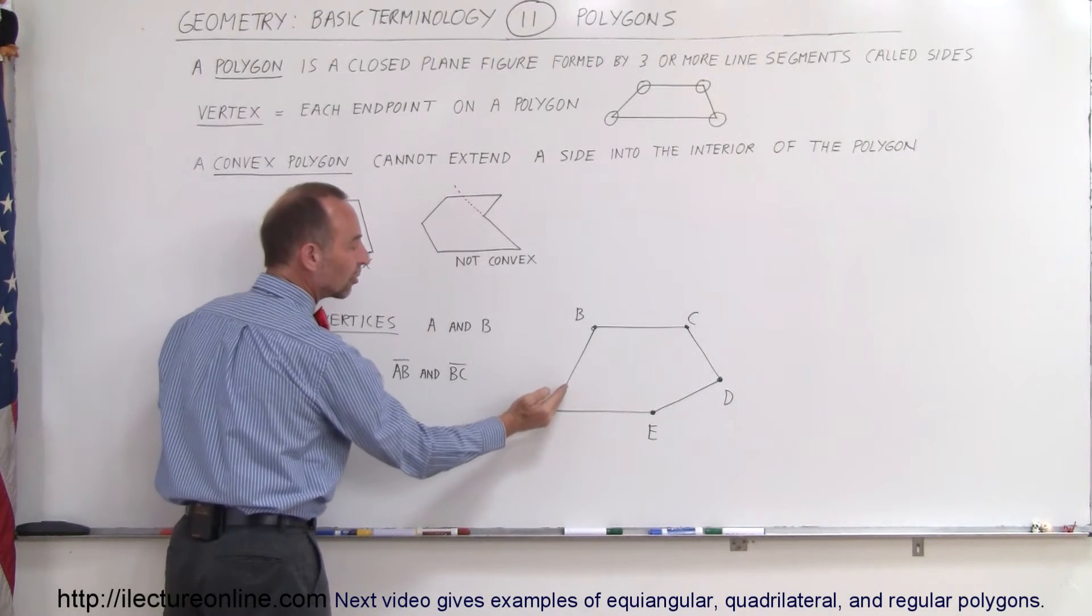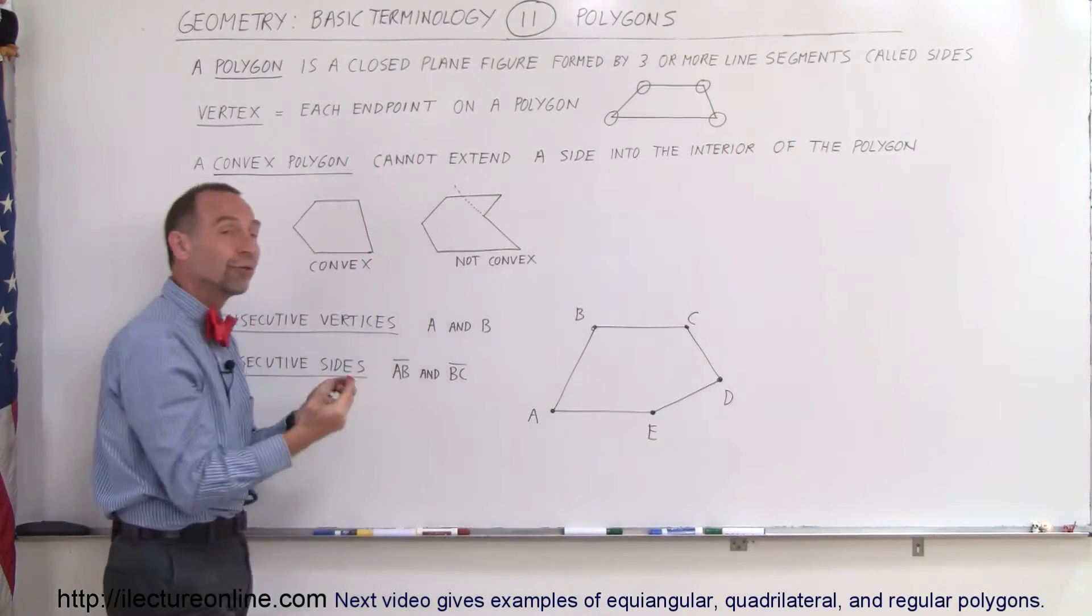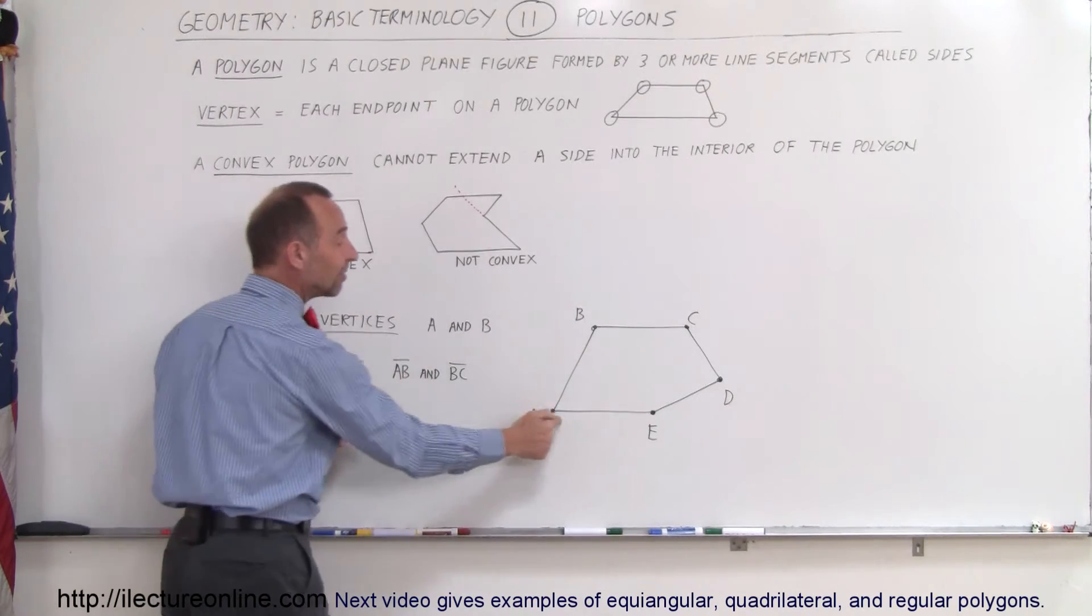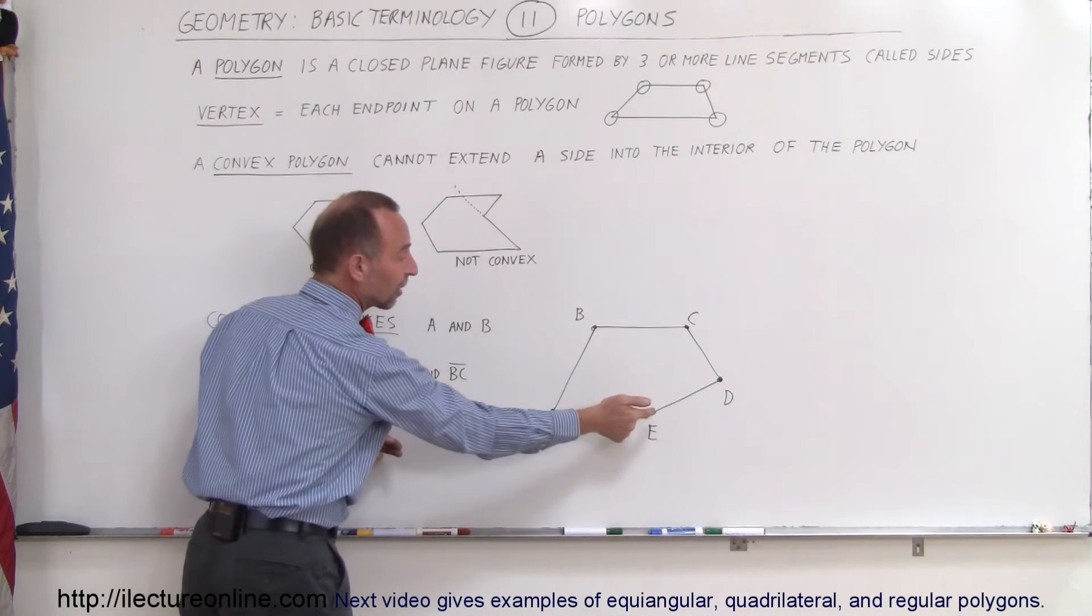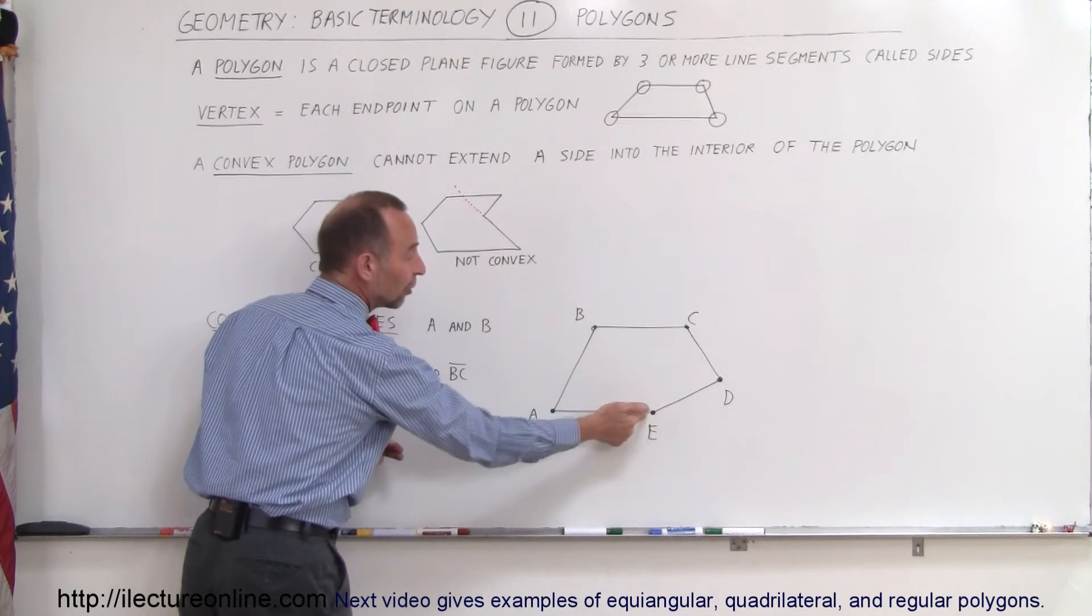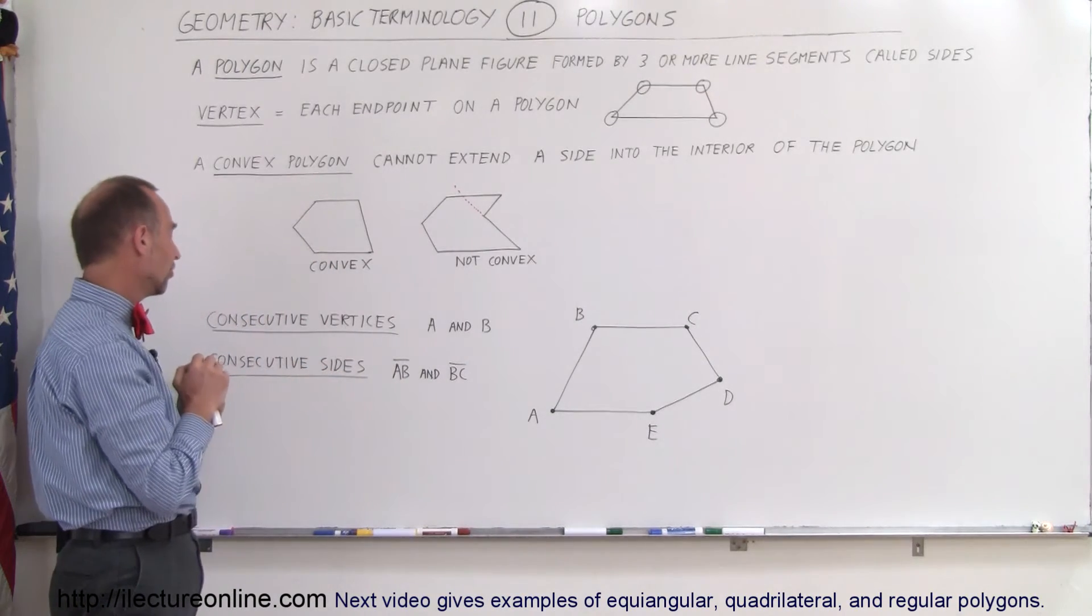So if you start at A and you move along this line segment, you get to B, you can then say that A and B are consecutive vertices. But also, A and E are consecutive vertices because you can start at A, move along the line segment to E, and that's the next vertex starting from A. So therefore, they're also called consecutive vertices.